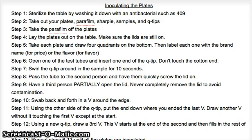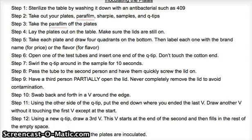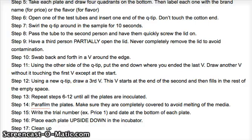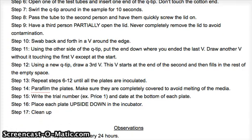To inoculate your plates, first sterilize the table to make sure nothing contaminates your plates. Take out your materials and lay them in your sterile environment. Take your parafilm off the plates, then lay the plates out on the table with the lid still on. Take each plate and draw four quadrants on the bottom — make sure it's on the bottom because if it's on the top, the lid will move. Label each quadrant with the name of the brand or flavor. Open one test tube and insert one end of the Q-tip; don't touch the cotton end because you'll contaminate it.